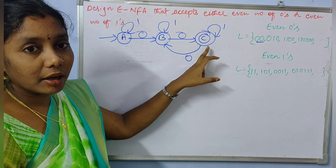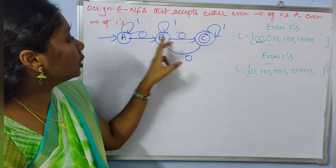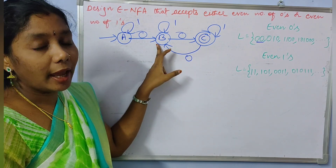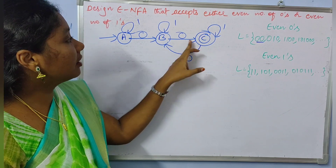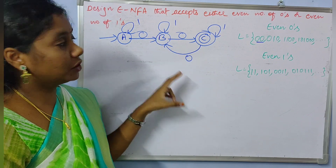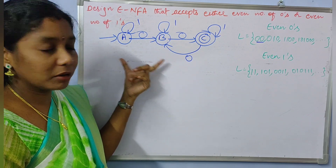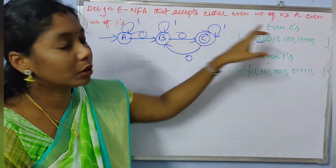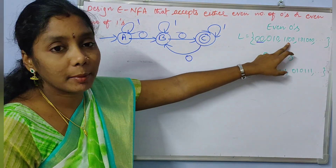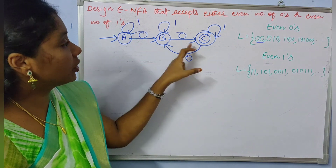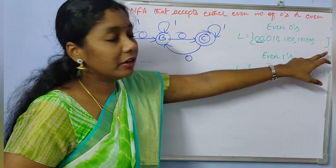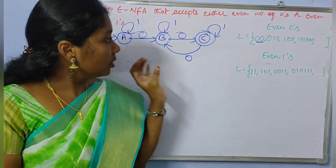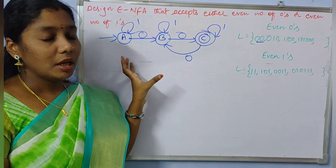At state C it reaches C with two zeros. If it goes with another zero to B, it needs another zero to reach C again, making the total an even number of zeros. Let us verify: it accepts '00', it accepts '010', it accepts '1100 11', it accepts '010100' — three zeros would not be accepted. So this is the NFA for accepting all even number of zeros.